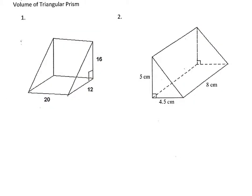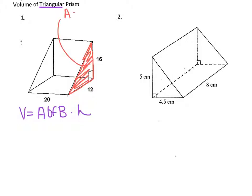Let's take a look at a couple more examples. In the next example, we have another prism, but this one is a triangular prism. However, the formula is the same — for any prism, it's area of base times height. We're going to color in the base, and since this is a triangular prism, the base is one of the triangles. The formula for area of a triangle is one-half base times height. The base is 12 and the height is 16. Remember, the base and the height have to be perpendicular to each other — you can see the right-angle box. So, one-half times 12 times 16 equals 96. The area of the base is 96.